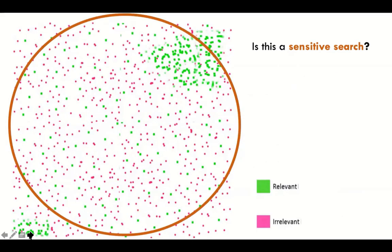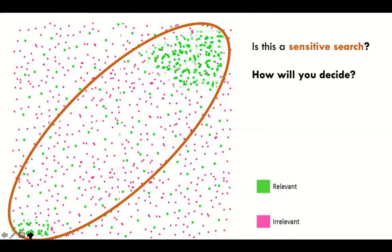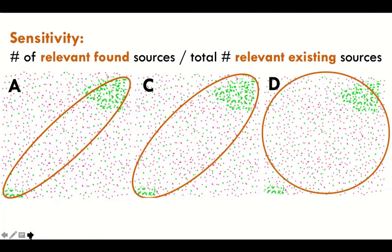What about sensitivity? Sensitivity is the number of relevant found sources divided by the total of relevant existing sources — and here's the problem: we don't know how many relevant existing sources exist at any given time. We can only estimate. Given that, is C better or D better? C is absolutely better — D is not that much worse.